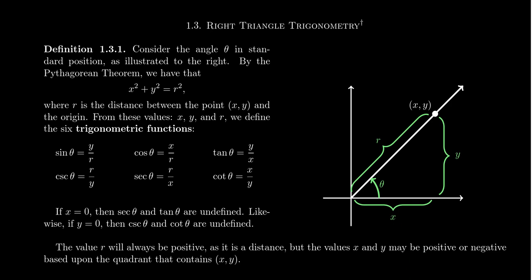In this video, we'll give you one of the definitions — the definition of a trigonometric ratio with respect to an angle. Imagine we have some angle theta, just some angle in the plane. We're going to put this angle in its standard position. Standard position means the initial side of the angle coincides with the positive x-axis, and then the terminal side of the angle is wherever it is in the plane. We're going to pick any point on the terminal ray of the angle other than the origin itself.